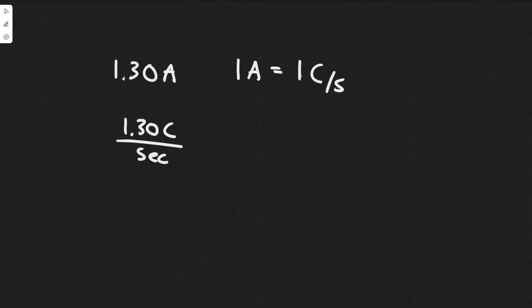We're trying to find electrons per second. They give us above the problem the charge of an electron. One electron equals 1.60 times 10 to the minus 19 coulombs.